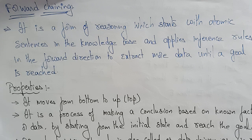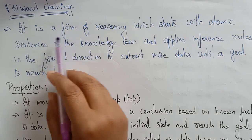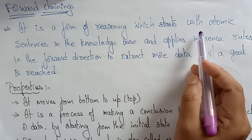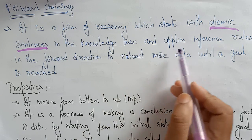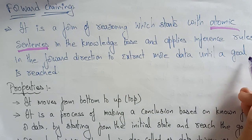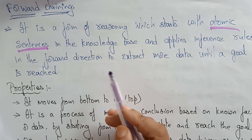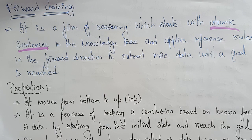This forward chaining is also called forward reasoning. Whenever you are seeing the question, forward reasoning means don't confuse — it is another name for the forward chaining. It is a form of reasoning which starts with the atomic sentence in the knowledge base and applies inference rules in the forward direction to extract more data until a goal is reached.